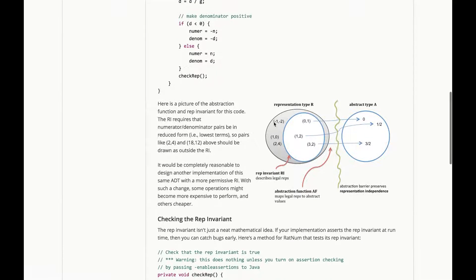Here's a picture of the abstraction function and the rep invariant for this code. The rep invariant requires that the numerator-denominator pairs be in reduced form, lowest terms. So pairs like 2,4 and 18,12 should be drawn as outside of the RI.